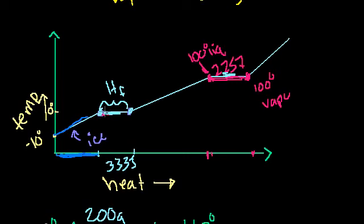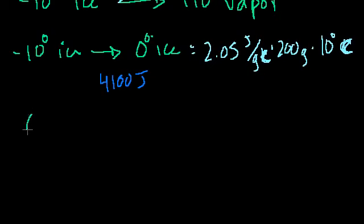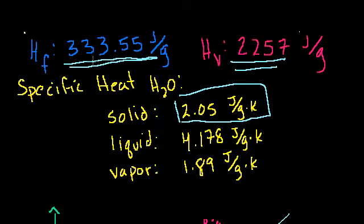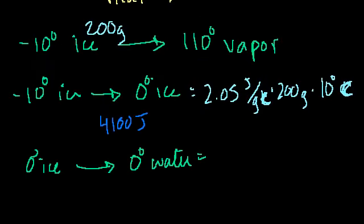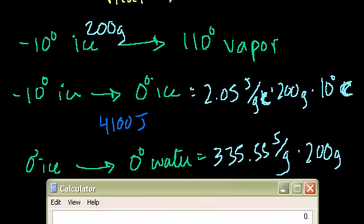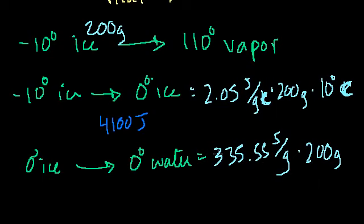Now we have to turn that 0-degree ice into 0-degree water, which uses the heat of fusion. The value is 333.5 joules per gram. So that's 333.55 joules per gram times 200 grams. Calculating: 333.55 × 200 = 67,110 joules to melt the ice — or to take it from ice to liquid water.